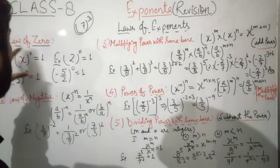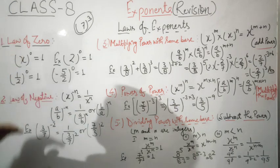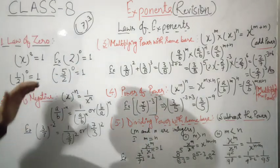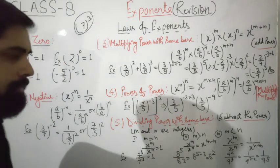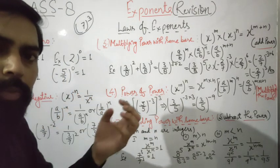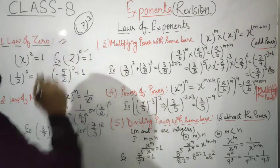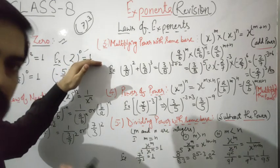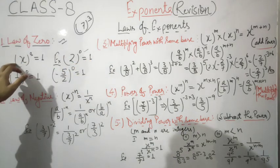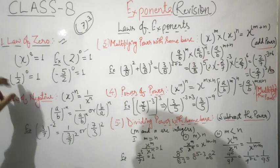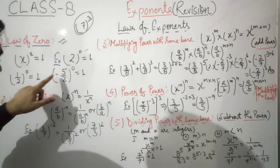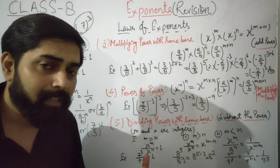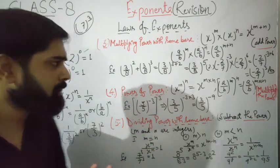This is the zero law: when the power of a number is zero, the value of that number equals one. So if any number's power is zero, its value will be one. For example: 2 to the power zero equals one; one upon two to the power zero equals one; and even 5.2 raised to the power zero equals one.